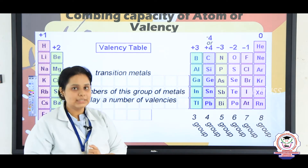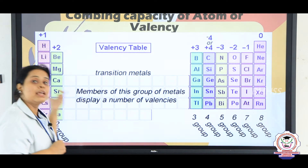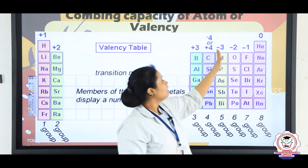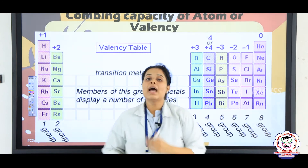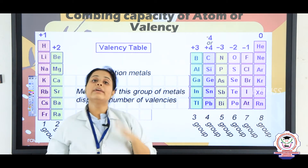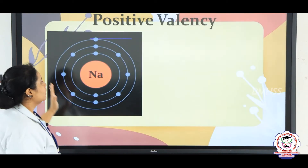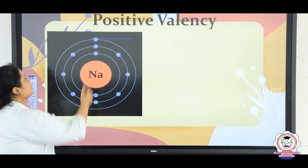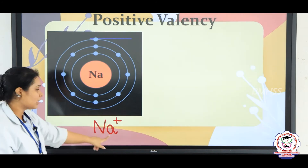In the periodic table, the starting 2 rows are generally showing positive valency — the electrons are being removed. From nitrogen to fluorine, elements form negative ions — electrons are added. Boron and carbon can also add electrons to become minus 4 valency, or remove 4 electrons to become positive valency. In positive valency, sodium having one electron in the outer shell removes it to become Na+.